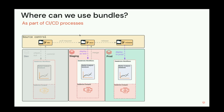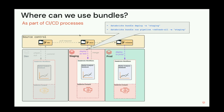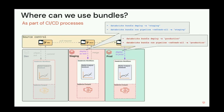Bundles are also very useful in CI/CD. When you make a pull request and need to push code to the staging workspace for tests, in your CI/CD process you just install the Databricks CLI and run 'databricks bundle deploy' to push your project there. Similarly, when you've merged your code and are ready to cut a new release and push to production, you run the same command on the CI/CD server. For example, using GitHub Actions, you install the CLI and use 'databricks bundle deploy' as part of your GitHub Action.